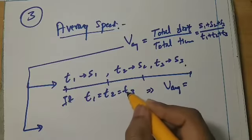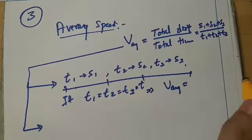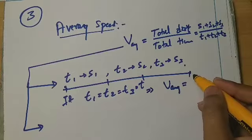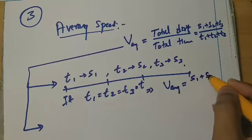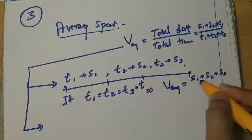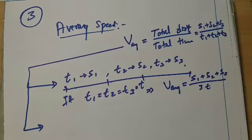Now, T1 is equal to T2 is equal to T3 is equal to some T. So this expression is S1 plus S2 plus S3 by 3T.